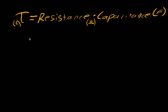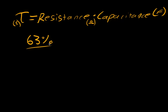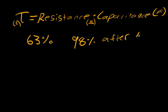The RC time constant is the amount of time it takes the capacitor to charge to about 63%. So after tau seconds, a capacitor will have 63% of the voltage accumulated within it. It's generally safe to say it's 98% charged — close to fully charged — after four tau periods.